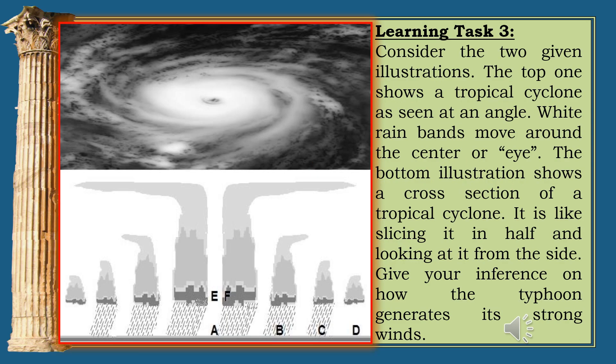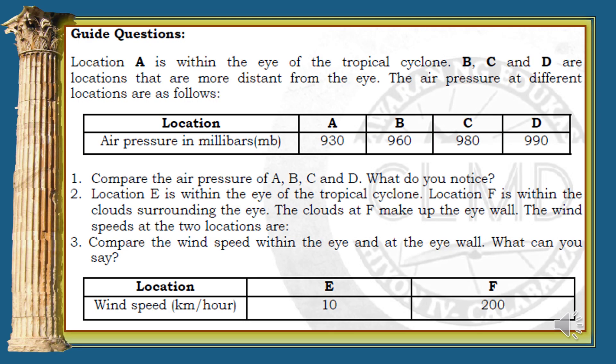Learning Task 3: Consider the two given illustrations. The top one shows a tropical cyclone as seen at an angle, where white rain bands move around the center or eye. The bottom illustration shows a cross-section of a tropical cyclone — like slicing it in half and looking at it from the side. Give your inference on how the typhoon generates its strong winds.